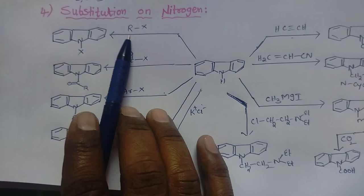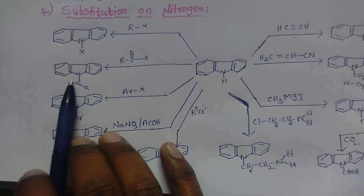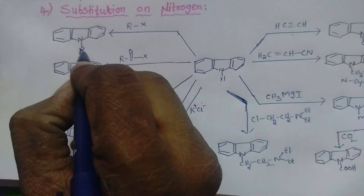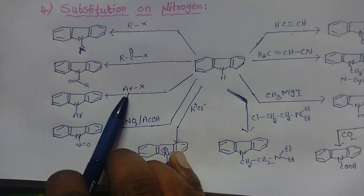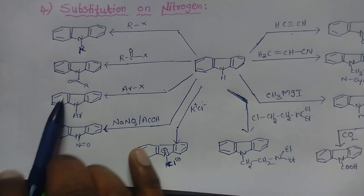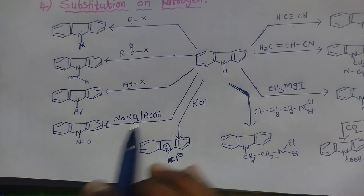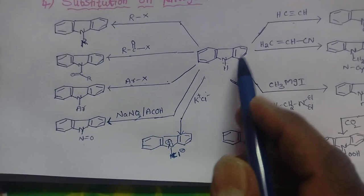When carbazole is treated with an alkyl halide, the alkyl group replaces the hydrogen to give N-alkyl carbazole. When treated with an acyl halide, we get N-acetyl carbazole. With aromatic halides, we get N-aryl carbazole, or specifically N-phenyl carbazole if phenyl is used. When treated with sodium nitrite in the presence of a strong acid, we get N-nitroso carbazole, where the NO group is the nitroso group.